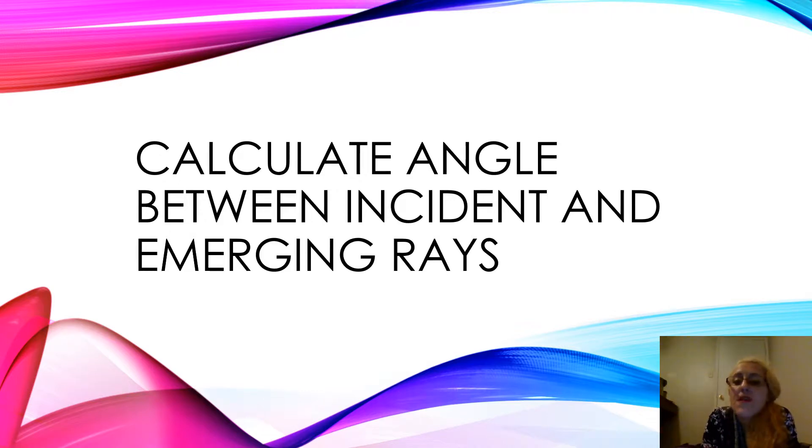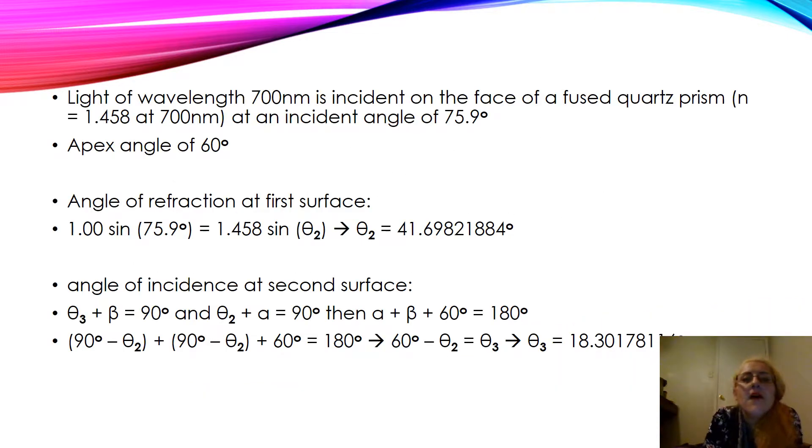Calculate angle between incident and emerging rays. Light of wavelength 700 nanometers is incident on the face of a fused quartz prism. The index of refraction n equals 1.458 at 700 nanometers at an incident angle of 75.9 degrees. The apex angle is 60 degrees.